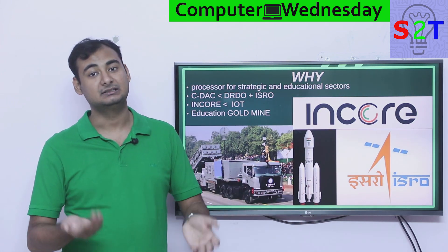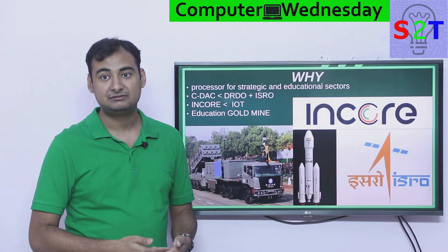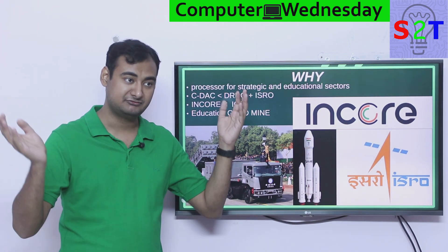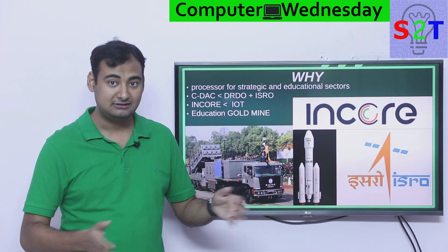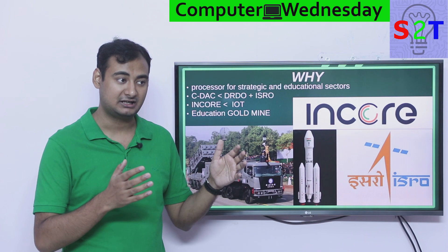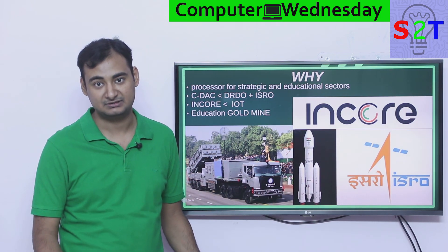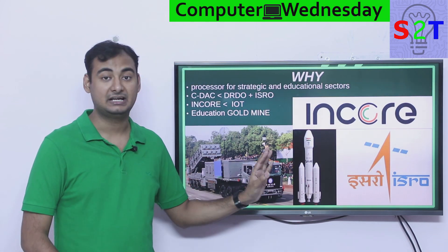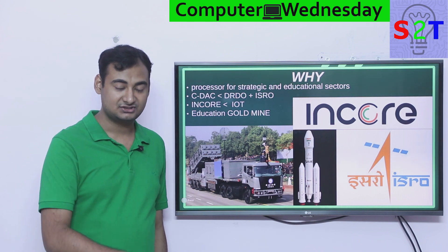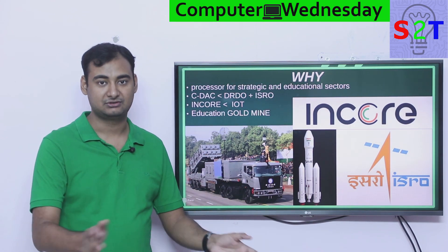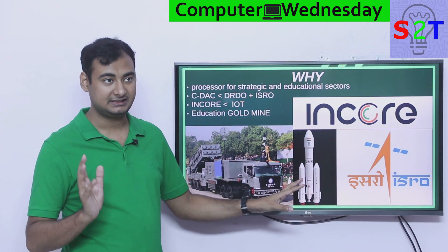Right now ISRO has to go to other companies like ARM and it takes time — they have to build a controller, figure out memory communication, and that adds years to rocket development. Instead of building a rocket in two years, they end up building it in six years because they're not in control of the processor aspect. With Shakti, ISRO can find a bug and fix it themselves without worrying about going through a third party. So for ISRO, this is a golden goose.